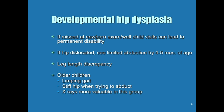If we miss this disorder in the newborn exam or early well-child visits, it can lead to permanent disability — one leg shorter than the other — impacting the hip and low back, with early development of osteoarthritis and chronic hip and back pain. If the hip is dislocated, we can see limited abduction by four to five months of age and leg length discrepancy. If we completely miss it, the child will limp when walking and have a stiff hip. For these older children, an X-ray tells us far more than either the Ortolani or the Barlow, which are really meant for very young children.